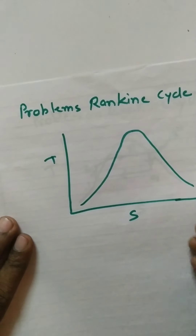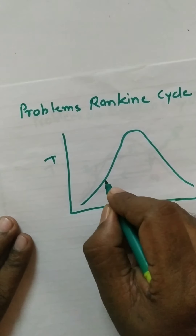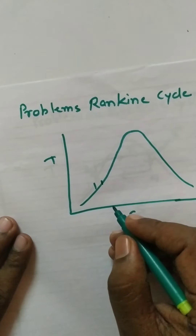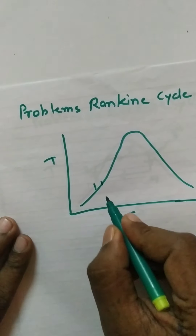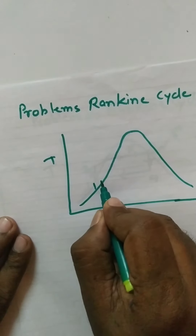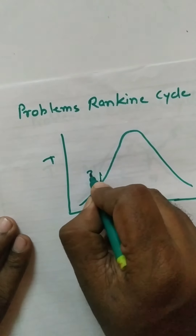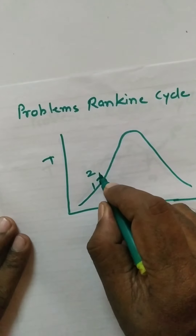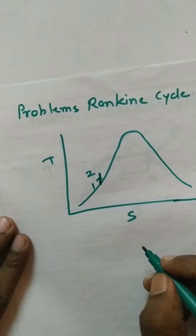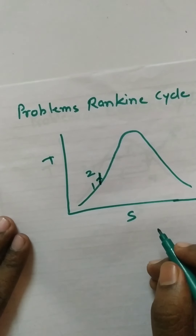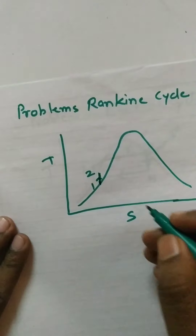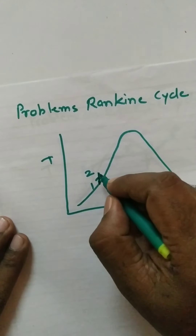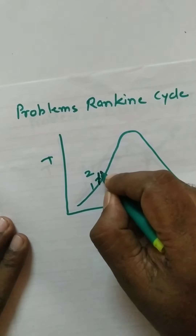Let us consider the Rankine cycle starting at point 1, where you are feeding water to the boiler. To feed water to the boiler, you have to increase its pressure, and that is done in the feed pump. So process 1 to 2 takes place in the feed pump, and it is considered an isentropic process. Isentropic means entropy is constant, so it is a vertical line on the T-S plot.